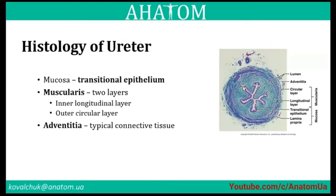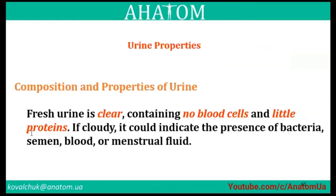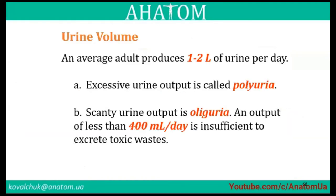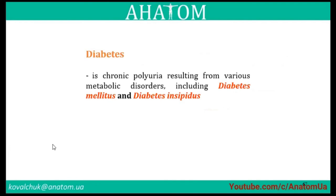Properties and composition of urine: fresh urine is clear, containing no blood cells and little protein. If cloudy, it may indicate the presence of bacteria, blood, or menstrual fluid. Normal urine volume in an average adult is one to two liters per day. Excess urine output is called polyuria; reduced output is oliguria. Output less than 400 milliliters per day is insufficient to excrete toxic wastes. Diabetes is a chronic polyuria resulting from various metabolic disorders.